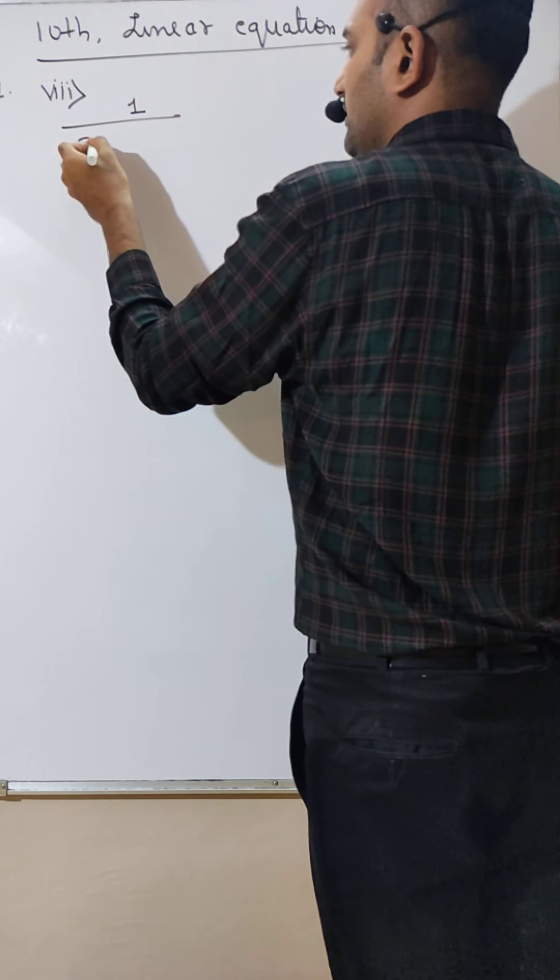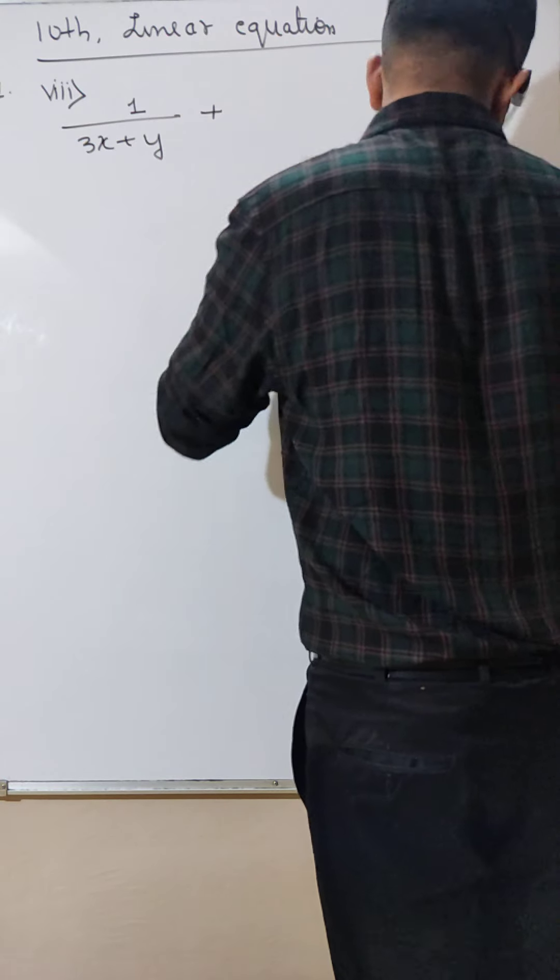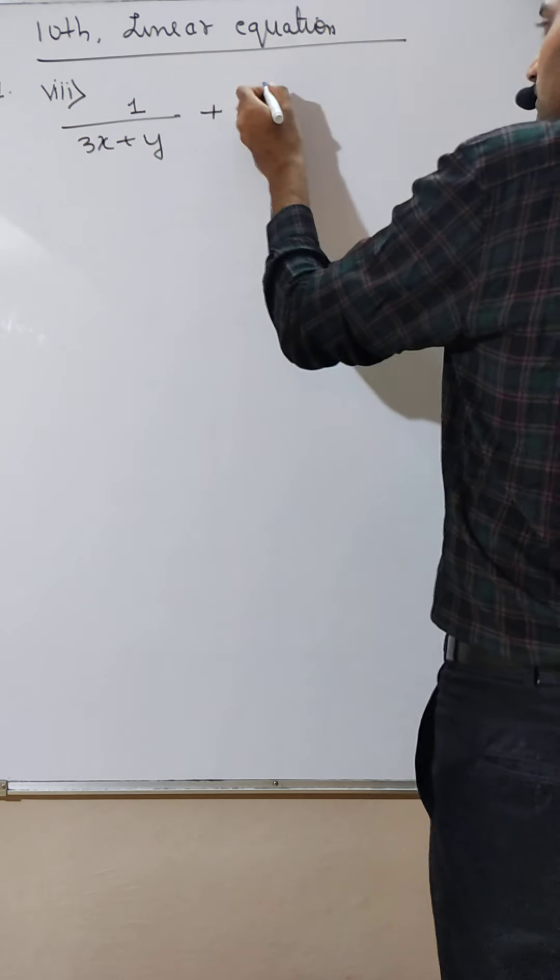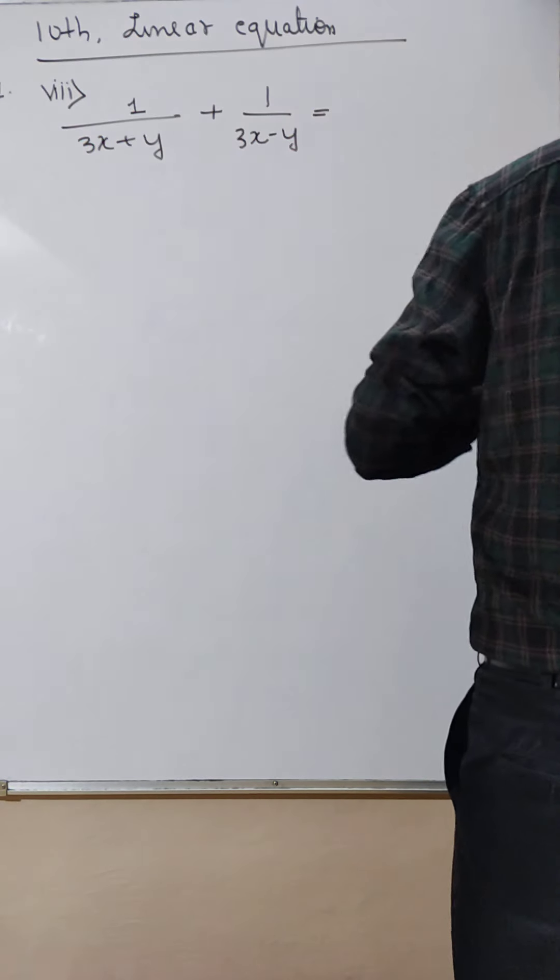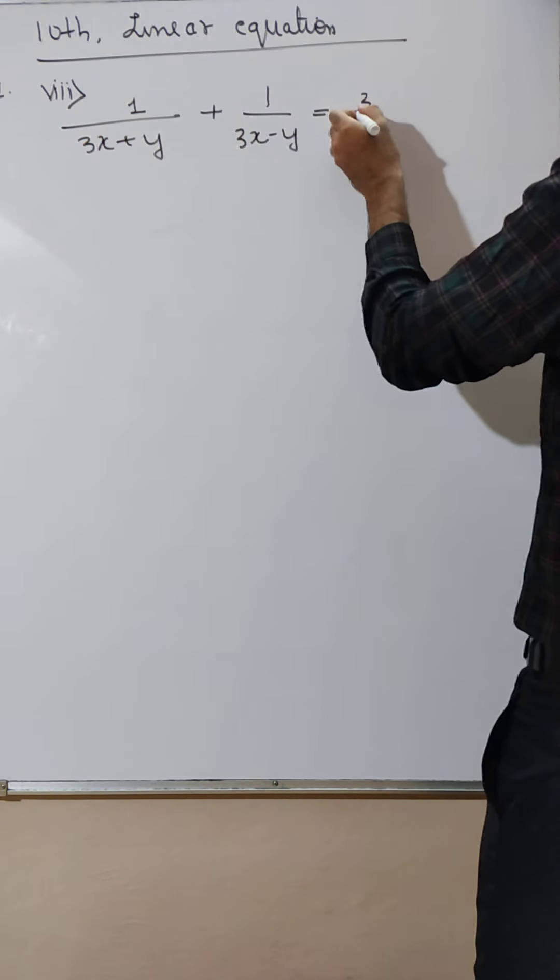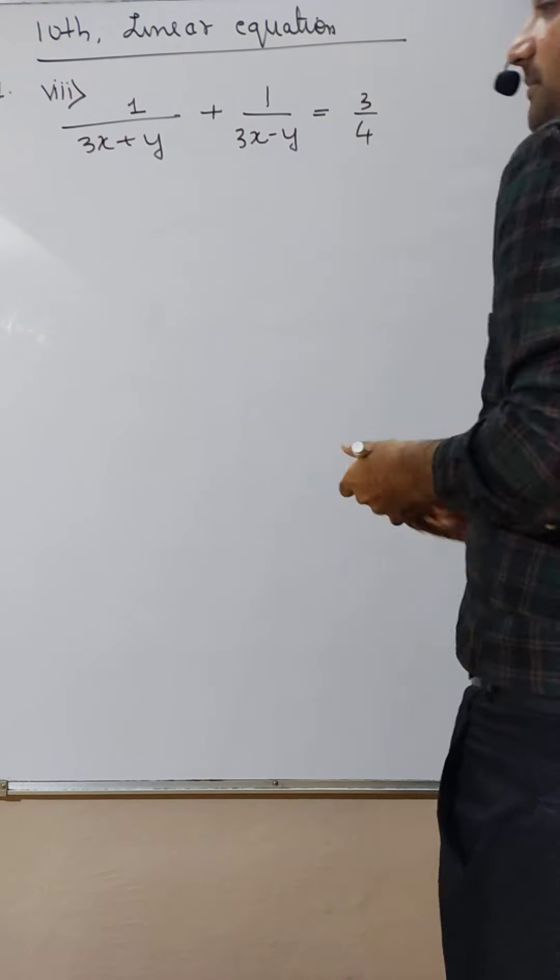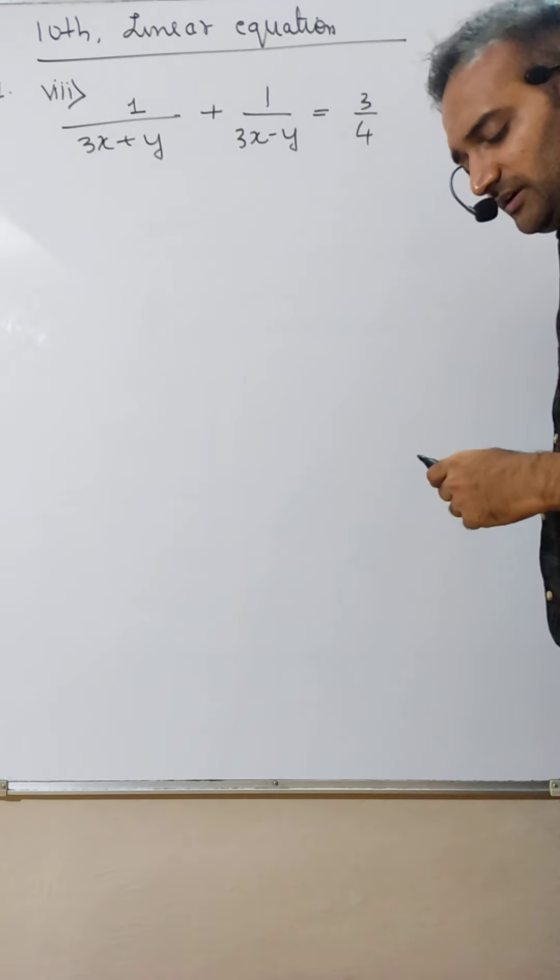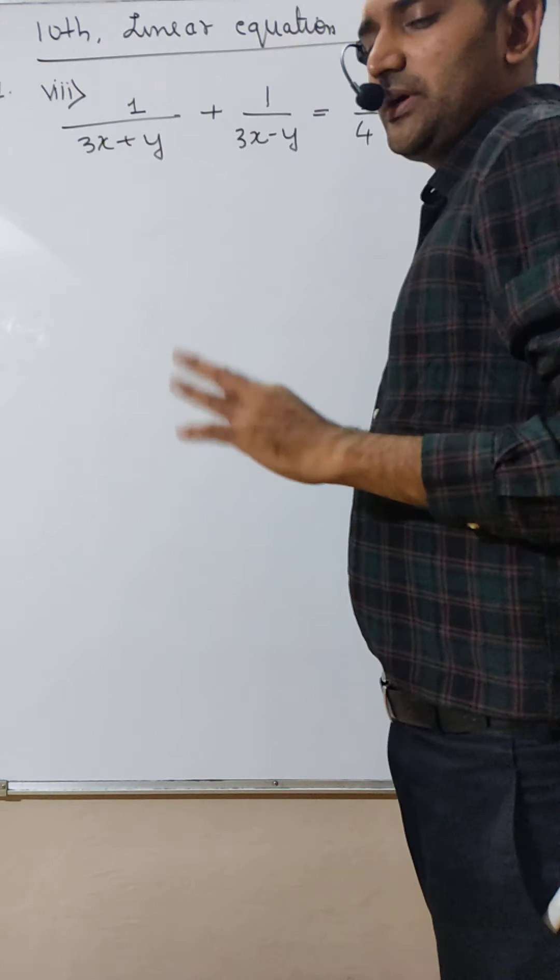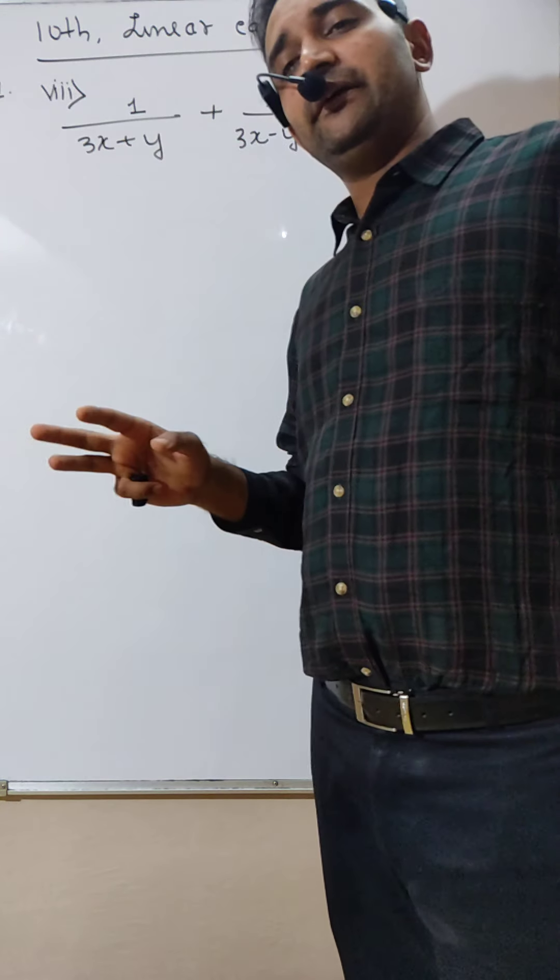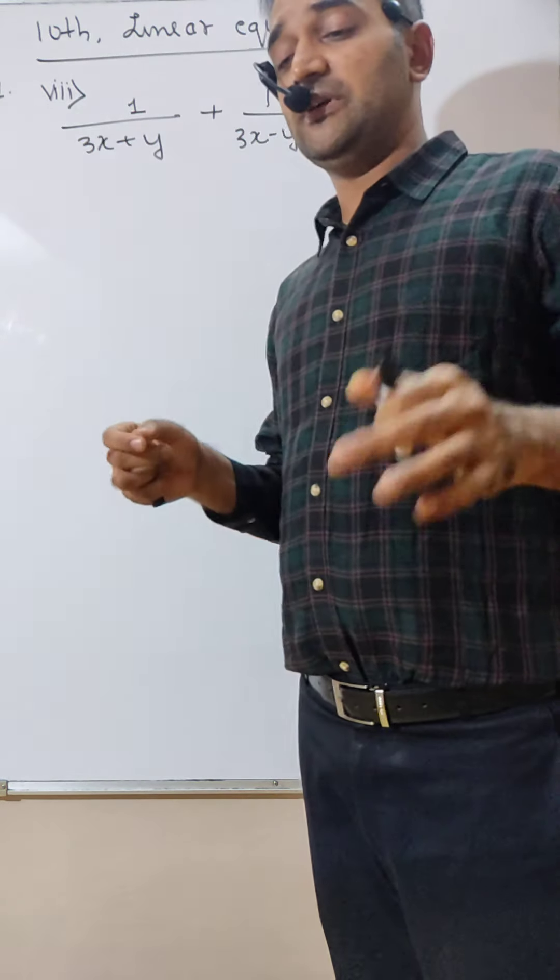1 divided by 3x plus y plus 1 divided by 3x minus y is equal to 3 by 4. Okay, I will do this. Today we shall finish linear equation, then we will halt. Then maybe we can go to graphs and all those things, then quadratic equations. Don't worry, still 1 month we have, ample amount of time, and we are much ahead.